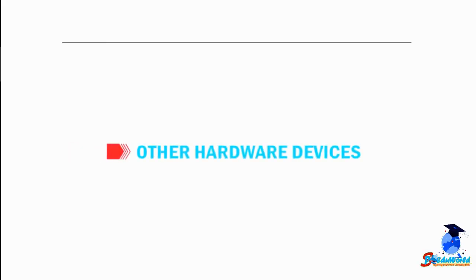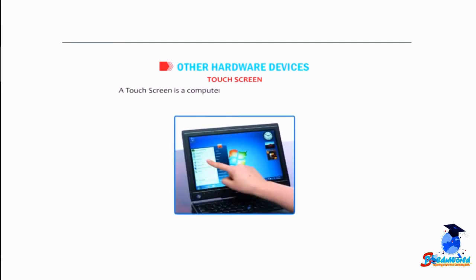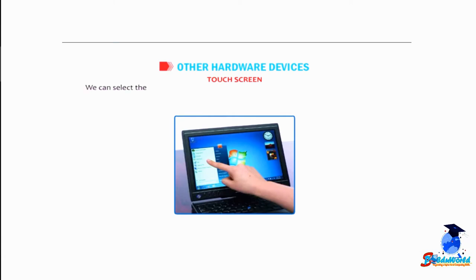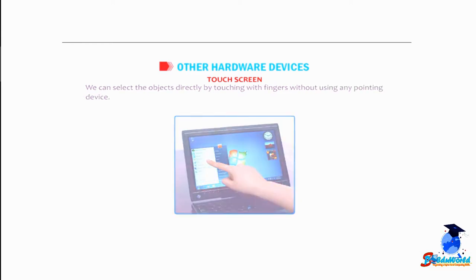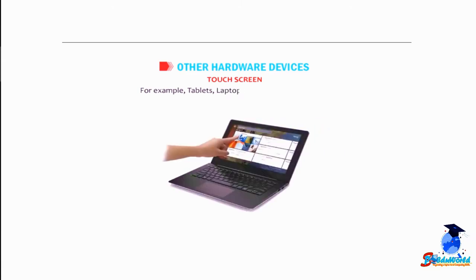Let's talk about other hardware devices. A touchscreen is a computer screen that is sensitive to touch. We can select objects directly by touching with fingers without using any pointing device. For example, tablets, laptops, ATM machines, cell phones, etc.